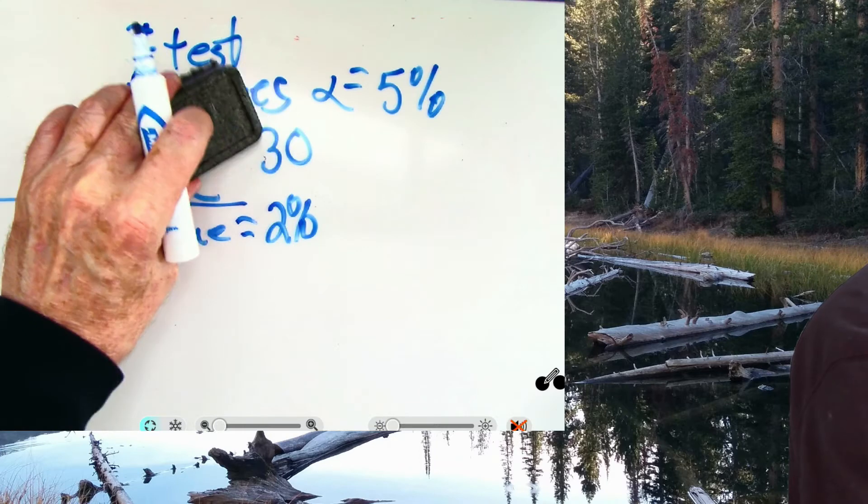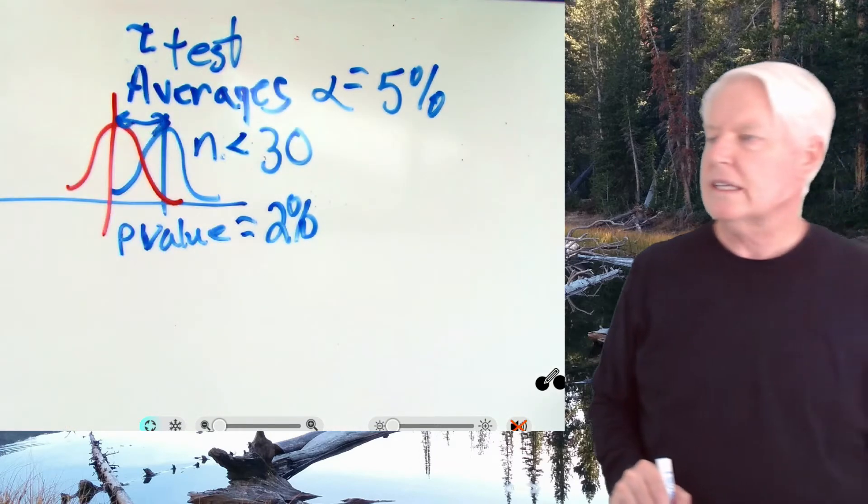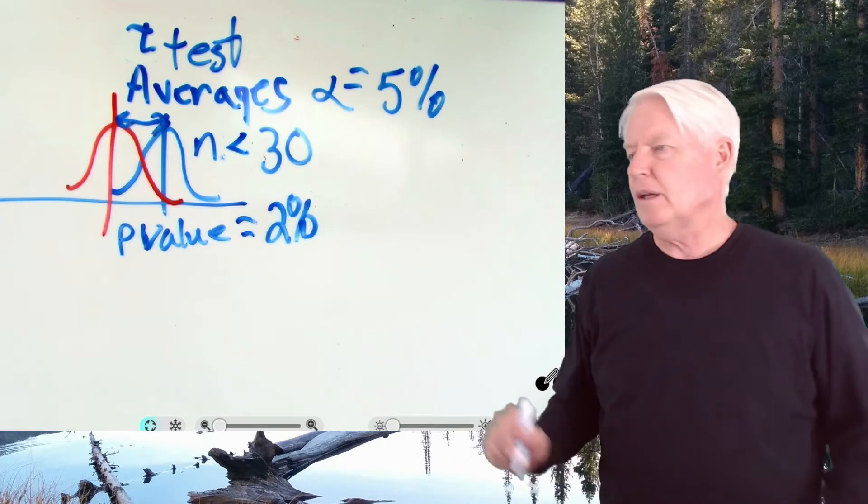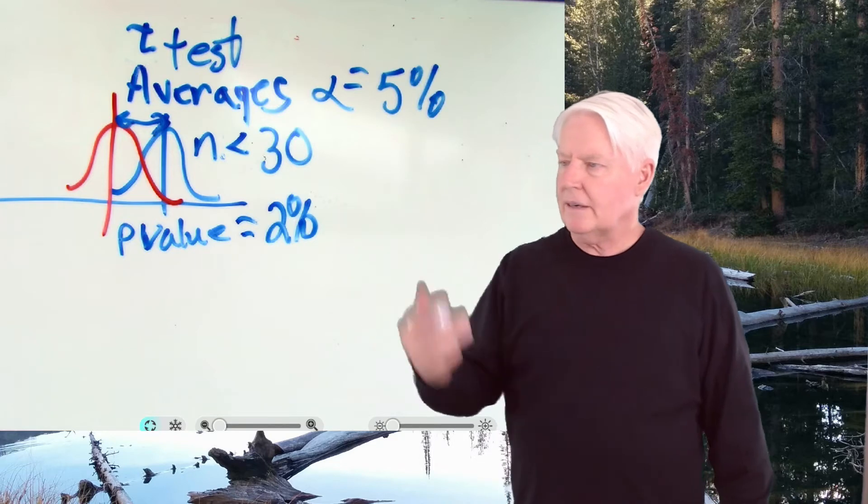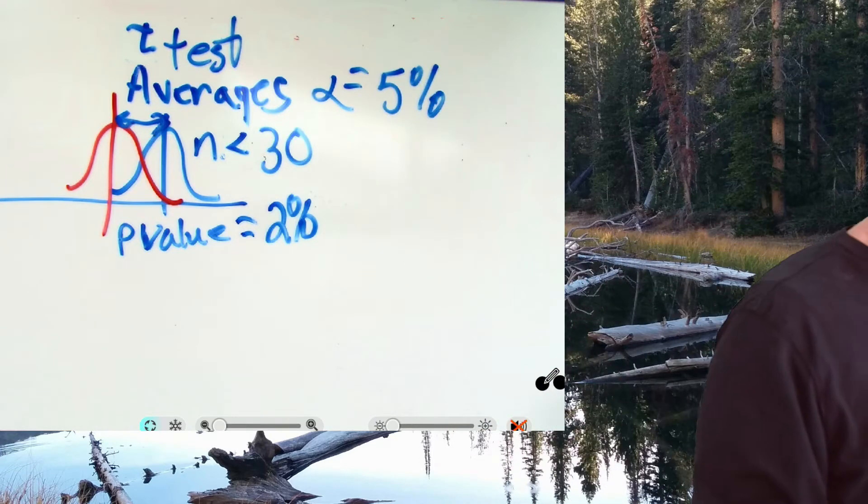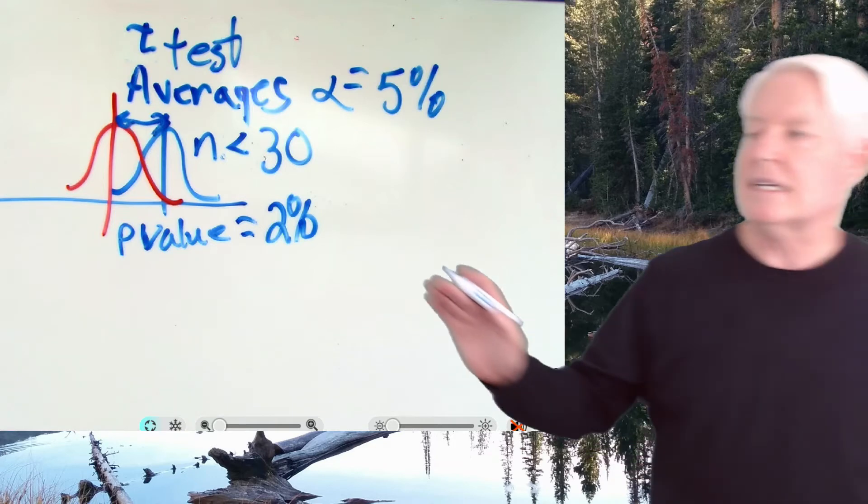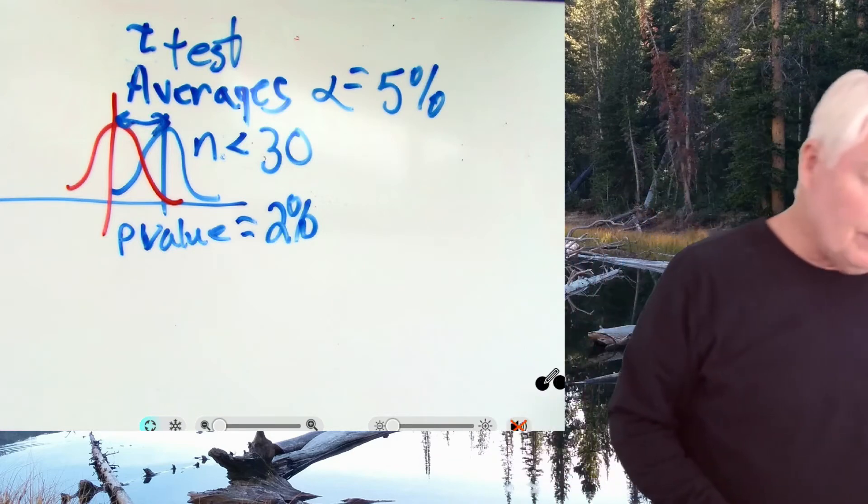Now, if you have sample sizes less than 30, that's when you want to use the T test. If you looked at the mathematical formulas, they look almost identical. So again, the only difference here is the T test is an average test, just like the Z test, but it takes into account sampling error. The Z test does not. Alright, with that being a summary, now we need another test.